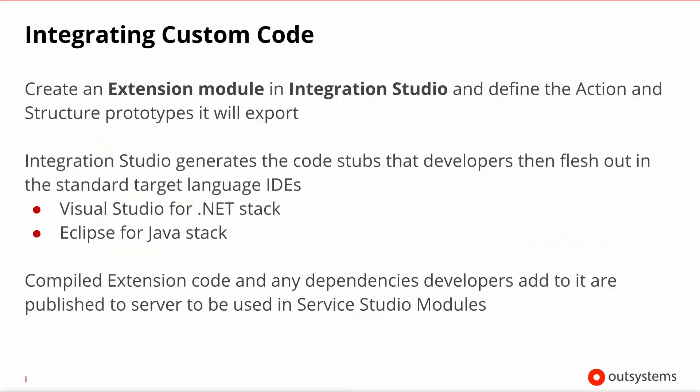Writing custom native code is also a breeze. You just need to create the extension module in Integration Studio and define whatever actions, together with their inputs and outputs, that you will want to write code for. Then Integration Studio will generate code stubs and the project for you to write using the proper visual environment for the dedicated language. So for the .NET stack of the OutSystems platform you will use Visual Studio, while for the Java stack of the OutSystems platform you will use Eclipse.